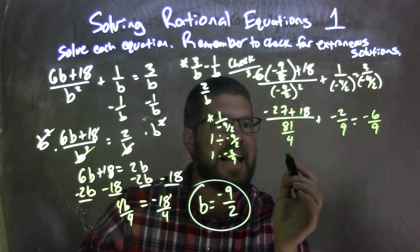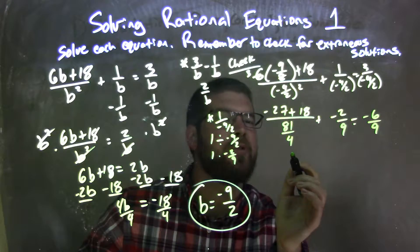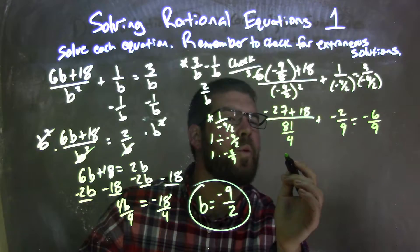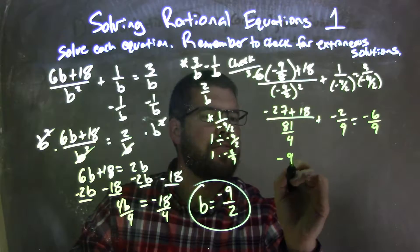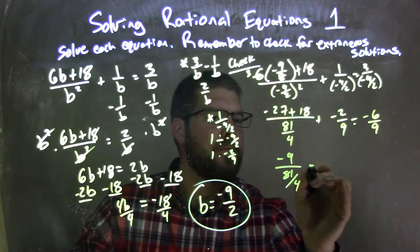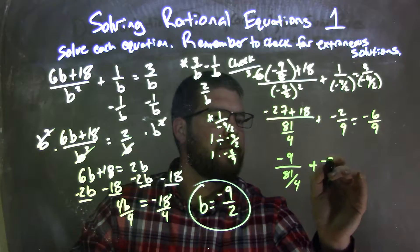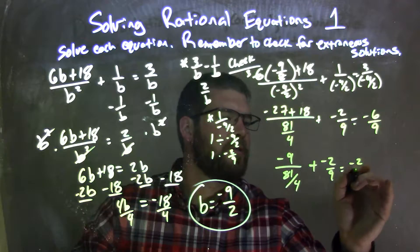What's negative 27 plus 18? Negative 27 plus 18 comes out to be negative 9. So we have negative 9 here over 81 divided by 4 plus negative 2 ninths equals, we can simplify this a little bit, that's negative 2 thirds.